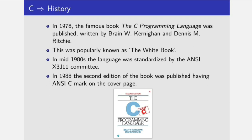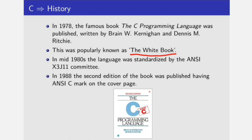In 1978, the famous book 'The C Programming Language' was published. This was written by Brian W. Kernighan and Dennis M. Ritchie. This was very popularly known as The White Book. In mid 1980s, the language was standardized by the NCC X3J11 committee, the American National Standards Institute.